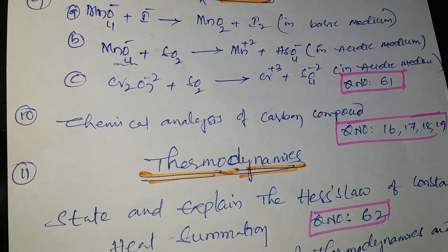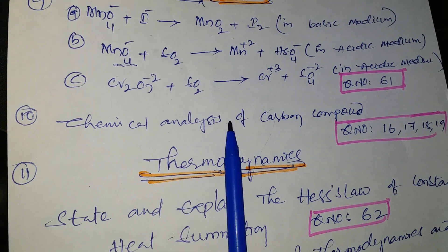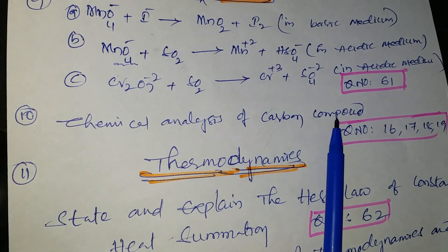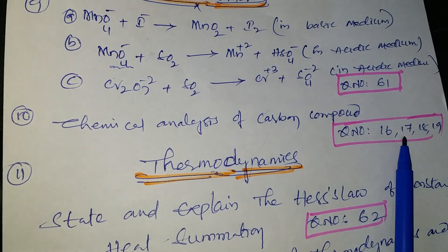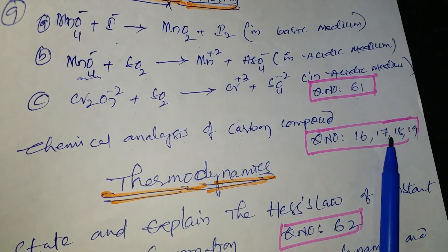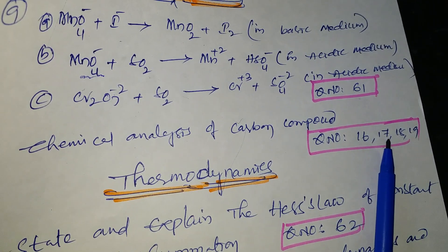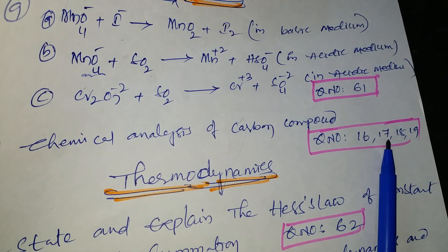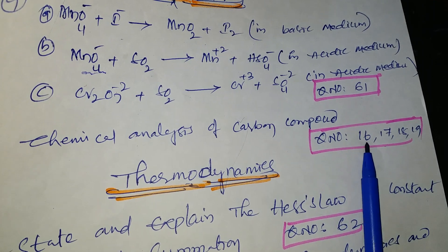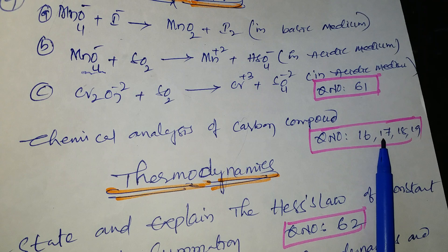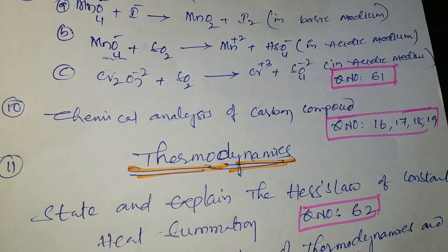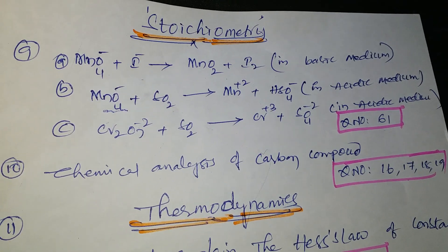In the stoichiometry lesson, problems on chemical analysis — composition and components: question numbers 16, 17, 18, and 19 are important. These four problems, along with the five questions already covered, are the key questions from the stoichiometry lesson. Problems 16, 17, 18, and 19 are from the Telugu academic textbook.